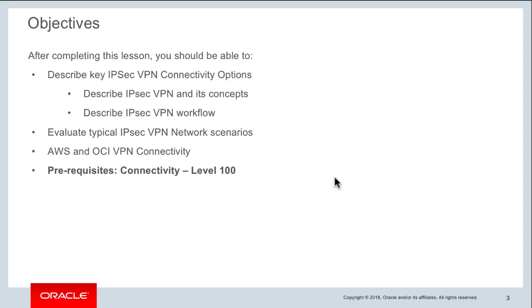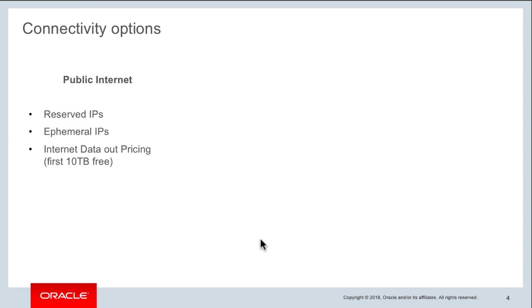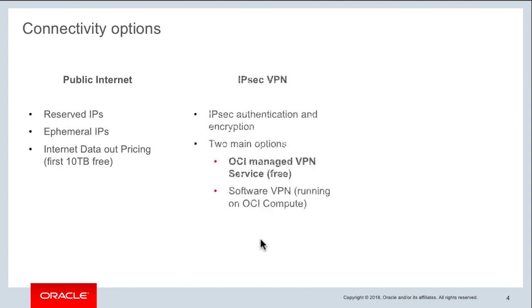Let's quickly recap the different connectivity options when you have workloads running within your virtual cloud network. The first option is connecting over the public internet — you can attach reserved public IPs or ephemeral public IPs to your workloads and access them directly. This requires components like an internet gateway and opening ports in your firewall and security lists to allow that connectivity.